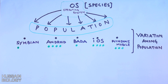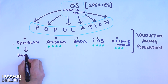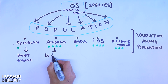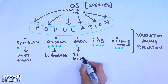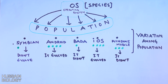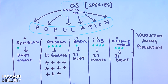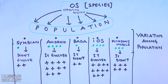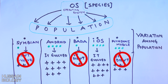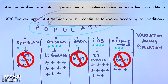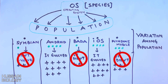Symbian did not evolve at all, Android evolved and still evolves, Bada did not evolve at all, iOS evolved and still evolves, and Windows Mobile also did not evolve at all. So Android and iOS, with too many positive variations, will survive while the rest are eliminated. We know Symbian, Bada, and Windows Mobile are obsolete now — these individuals within the population have been rejected or eliminated. Only Android and iOS are surviving, and it's all because of natural selection.